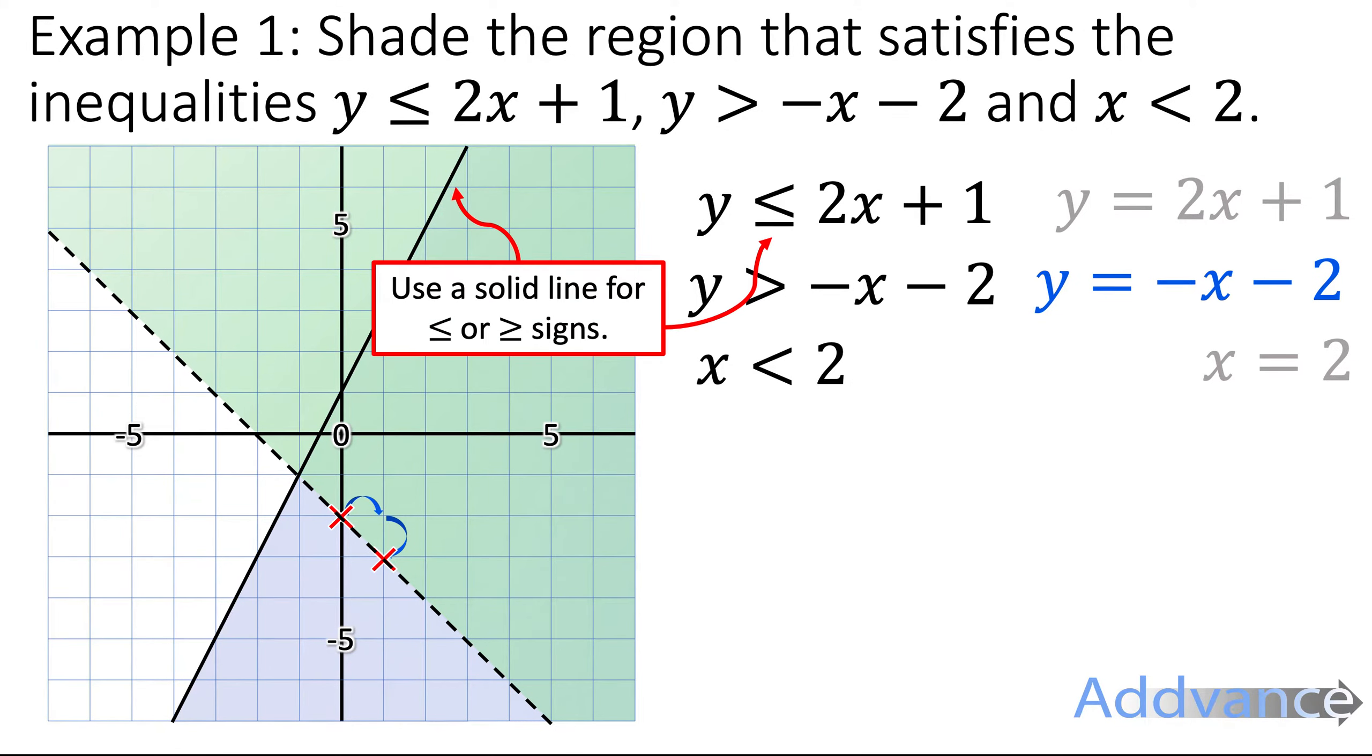We use a solid black line when it's less than or equal to or more than or equal to, whereas we use a dotted line for less than or more than signs. If it's got an equal to part, it needs to be a solid black line.